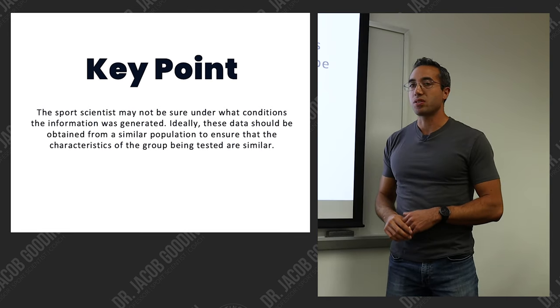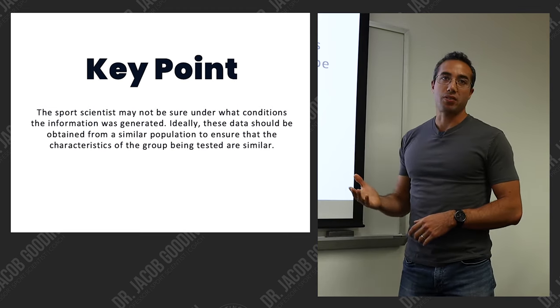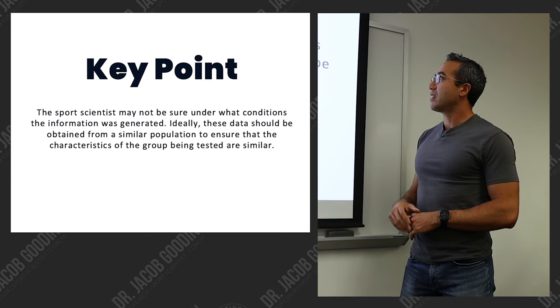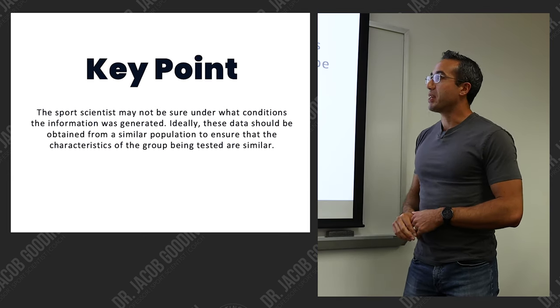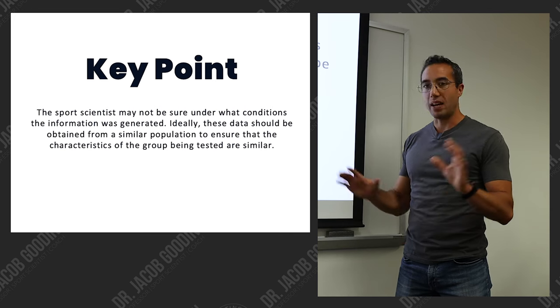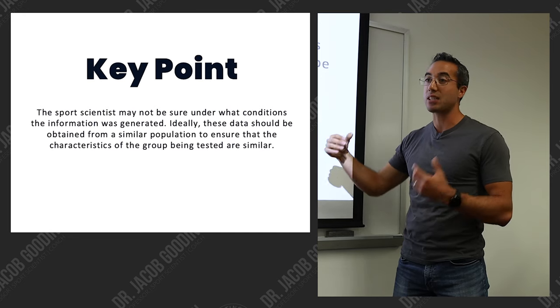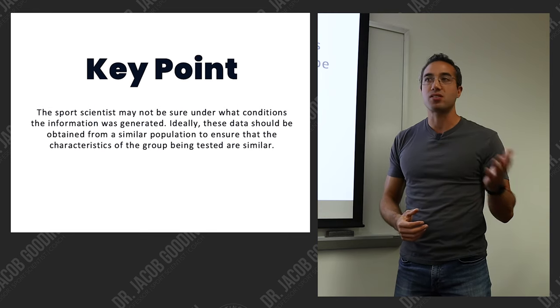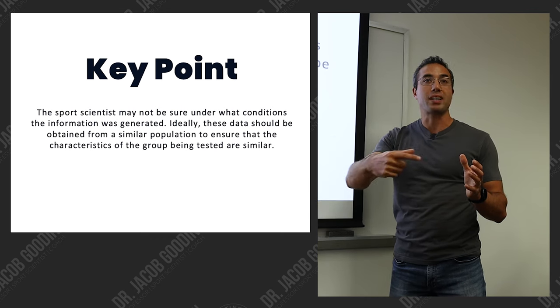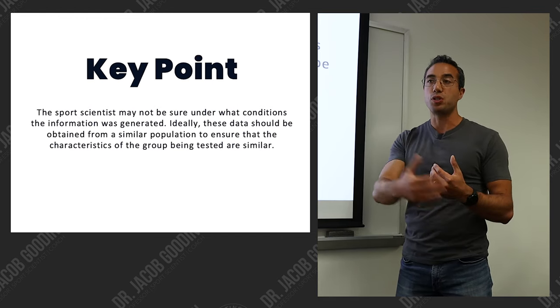A key point: sports scientists may not be sure under what conditions information was generated, whether you read it in the literature or a textbook or see it posted on Twitter. Ideally, these performance norms should be obtained from a similar population to ensure that the characteristics of the group being tested are similar—as similar as possible between your group and the performance norm. And if possible, figure out exactly how that data was collected. That's why in our lab assignments, I'm asking you to build out those methods for how you collected the data, because it's so important to understand how to read methods and how to keep track of your methods for how you conduct your testing.